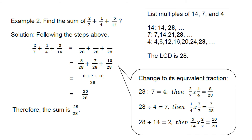Example 2: Find the sum of 2/7 plus 1/4 plus 5/14. First find the LCD. List multiples of 14: 14, 28. Multiples of 7: 7, 14, 21, 28. Multiples of 4: 4, 8, 12, 16, 20, 24, 28. The number common to all three is 28. Therefore, the LCD is 28.